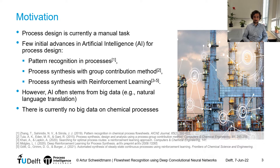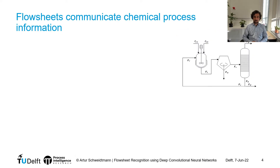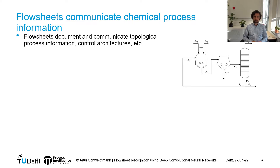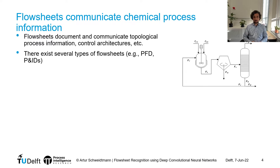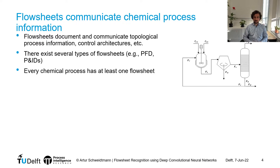So what is big data on chemical processes? Well, if we talk about data for chemical processes, we likely talk about flowsheets. Why? Because flowsheets document and communicate the topological process information, control architectures, and so on. There exists at least one flowsheet for every chemical process in the world, and there exists several types, including PFDs — process flow diagrams — and P&IDs — process and instrumentation diagrams. There exists a huge variety, in particular at least one for every chemical process ever built or developed.